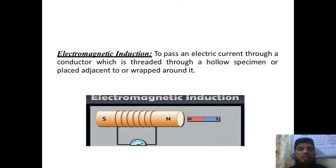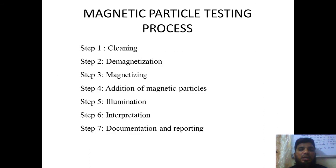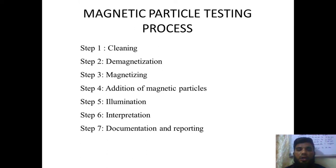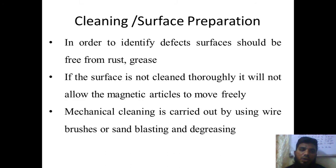We have already discussed magnetic induction and how it can be done. So in magnetic particle inspection process, first we have to clean the surface. Second step is demagnetization. Third is magnetization. Next we have to go for addition of magnetic particles. Next is illumination, interpretation, documentation and reporting.